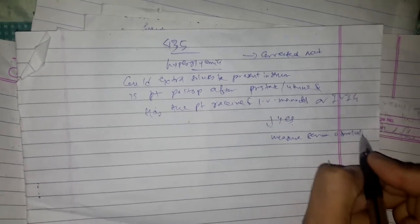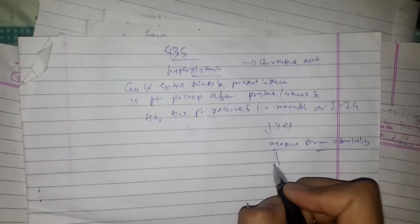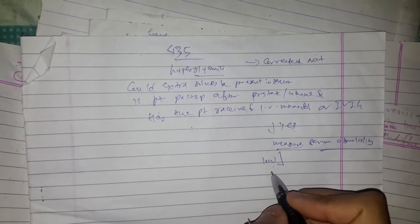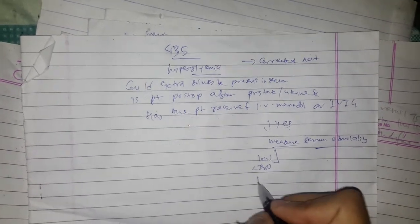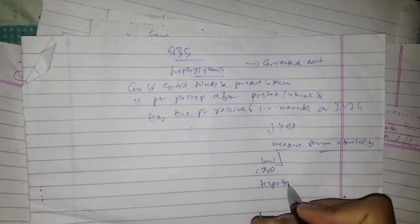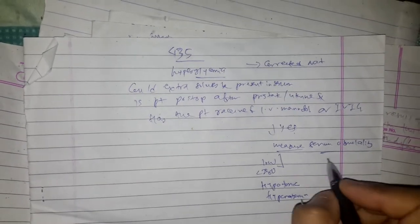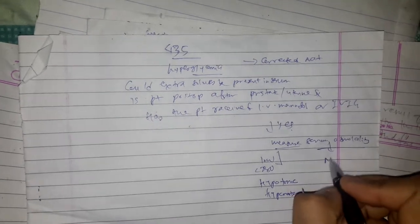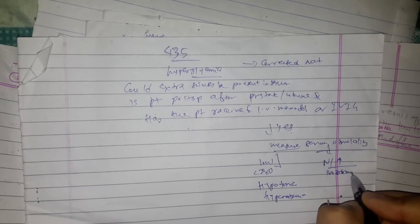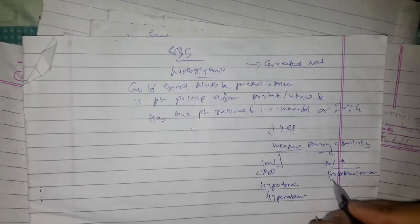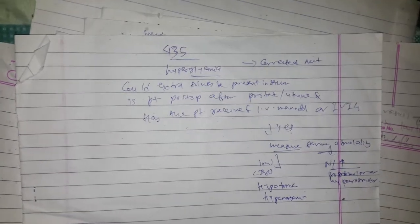After measuring serum osmolality: if osmolality is low — less than 280 milliosmol per kilogram — then it is hypotonic hyponatremia. If osmolality is normal or high, then it is isoosmolar or hyperosmolar hyponatremia.